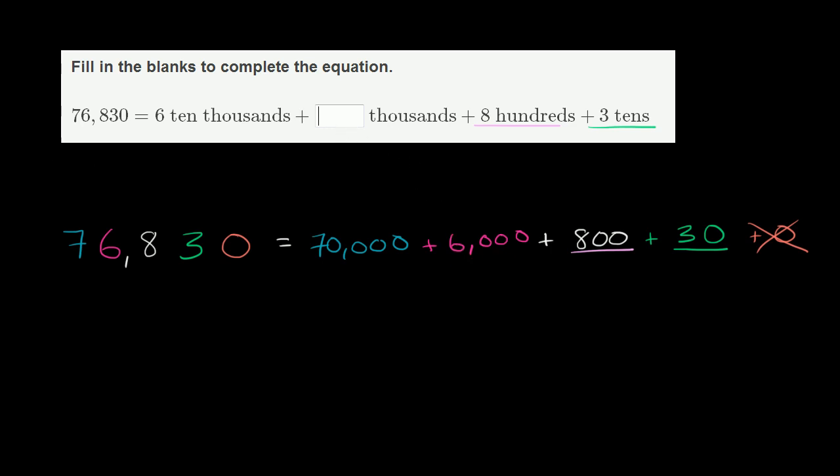They have blank thousands. Here we have six thousands. So we're going to have to think about this a little bit. And then they have six ten thousands, which is 60,000. Here we have 70,000. So we've got to work through these two places right over here.